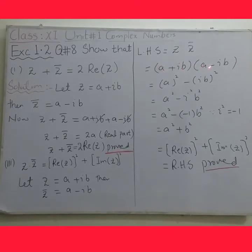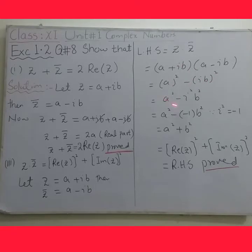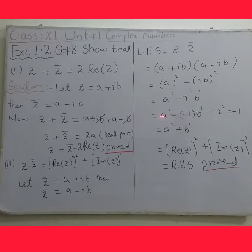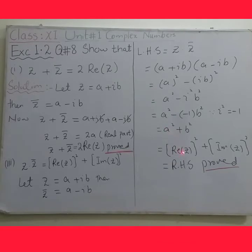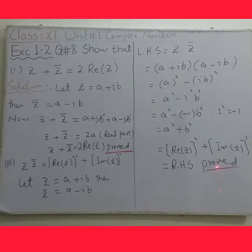Using the formula (a + b)(a − b) equals a² minus b², we get a² minus (iota b)², which equals a² minus iota² b². Since iota² equals minus 1, this becomes a² minus (−1)b², which equals a² plus b². Now a equals Re(z) and b equals Im(z), so we get [Re(z)]² plus [Im(z)]², which equals the right hand side. Part 3 is proved.